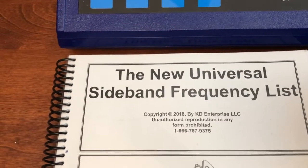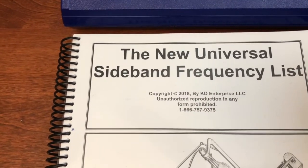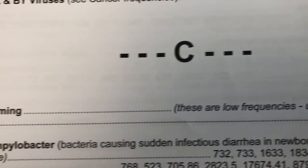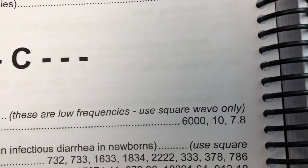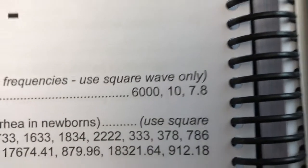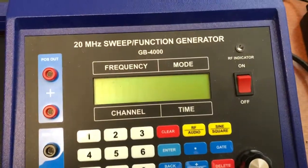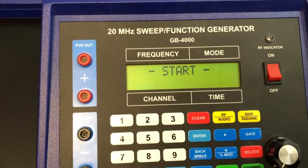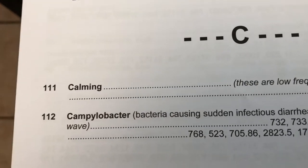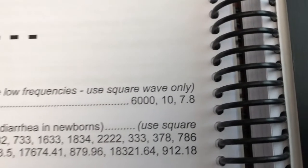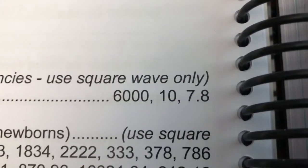We refer to our new universal sideband frequency list and look up a certain auto channel. For example, auto channel 111 — the frequencies are 6000, 10, and 7.8. So we go to our frequency generator, turn it on, wait for it to boot up, and verify channel 111 with frequencies 6000, 10, and 7.8.